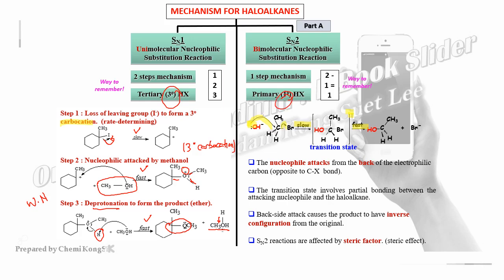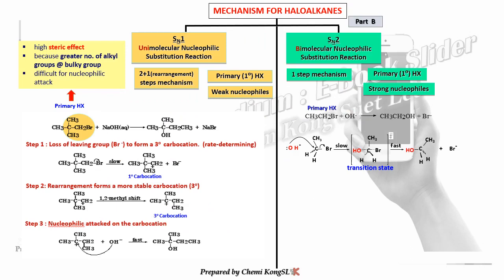Next example: this is a primary haloalkane, which normally goes for SN2. But here there is a large bulky group (tert-butyl), giving high steric effect. The greater number of alkyl groups makes backside attack very difficult, so this primary haloalkane undergoes SN1 instead. The steps are the same: step one, the bromide ion leaves to form a carbocation — but initially it is a primary carbocation, which is unstable.